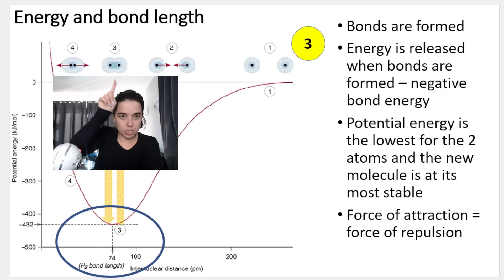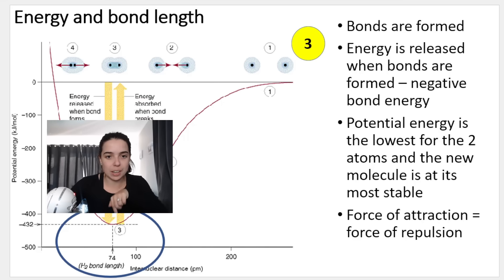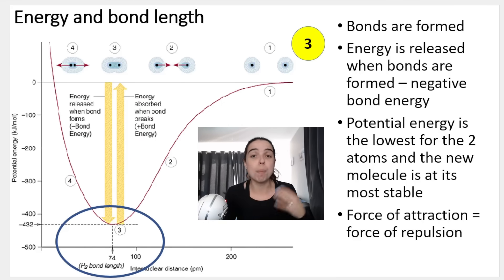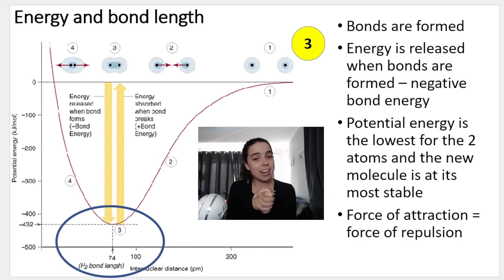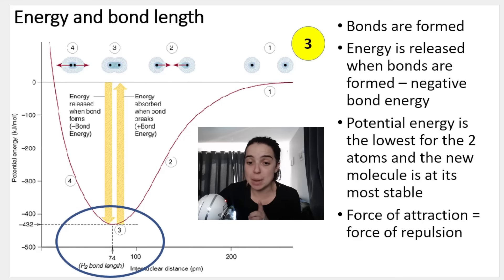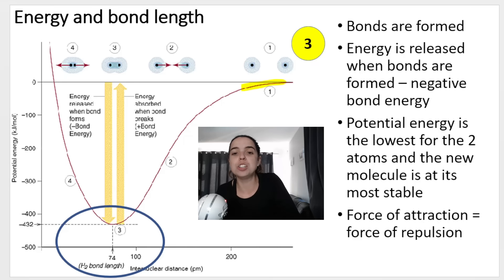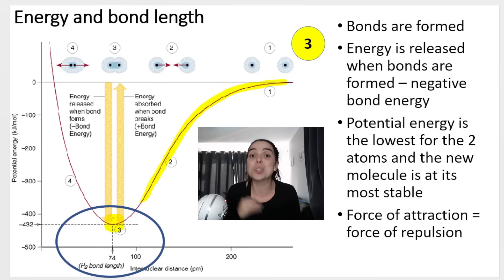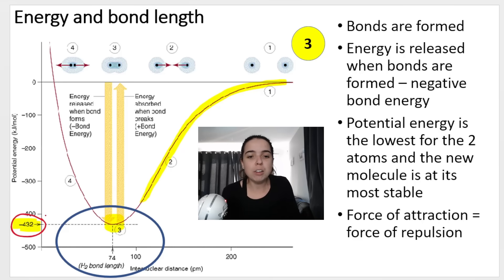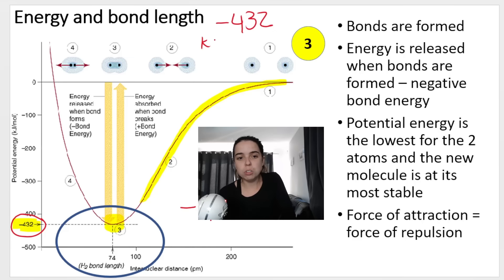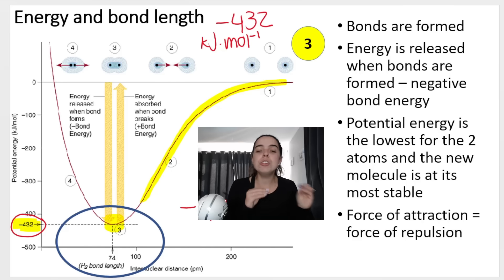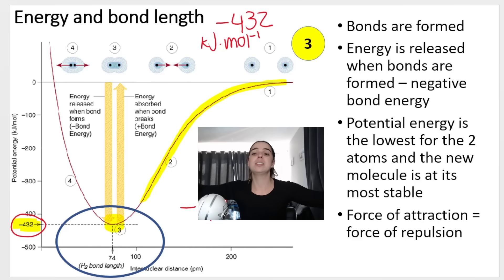At position number three - this perfect position - that's when the bond is formed, and it corresponds to the lowest point on the graph. When a bond is formed, energy is released. Potential energy is at its minimum. As the atoms approached each other, energy started decreasing, and at the bottom of the curve it's at a minimum. It corresponds to a potential energy value of negative 432 kilojoules per mole. That is the amount of energy released when the bond is formed.